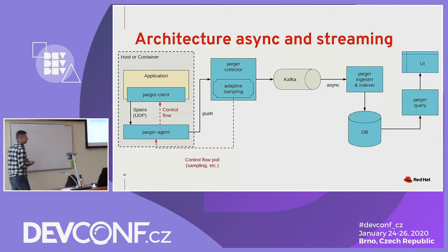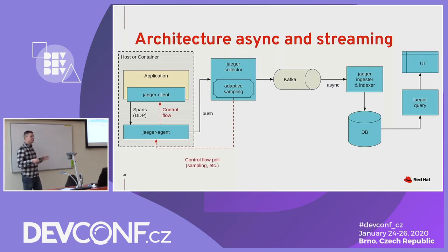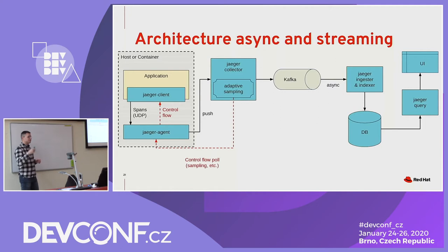This is the current Jaeger architecture. On the left side, there is your application instrumented with a Jaeger client or OpenTracing API, reporting data to the Jaeger collector. The collector sends data to Kafka, and from Kafka there is a separate component that reads from Kafka and stores to storage.